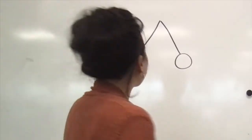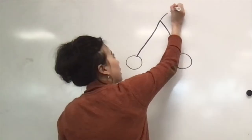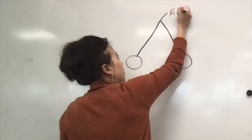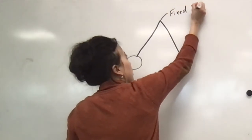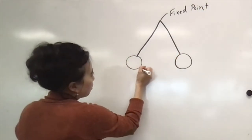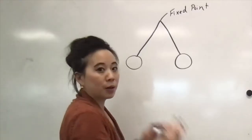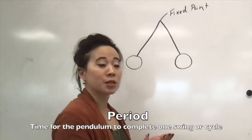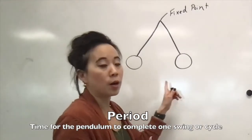When we talk about a pendulum, remember it is suspended from a fixed point and it's able to freely swing. The way that we define the period of a pendulum is the time it takes for it to complete one swing.